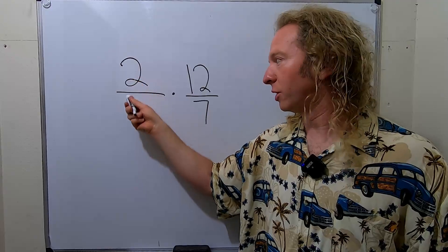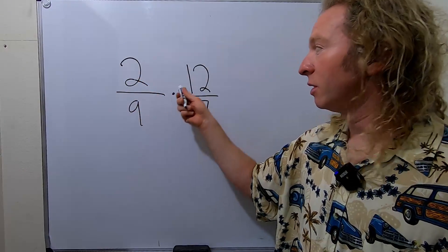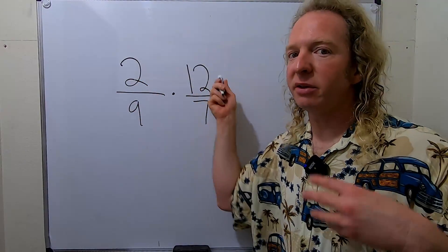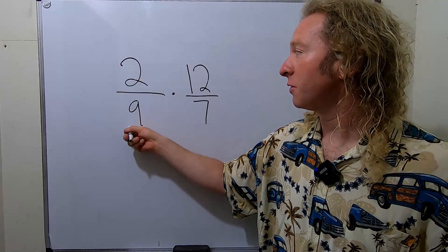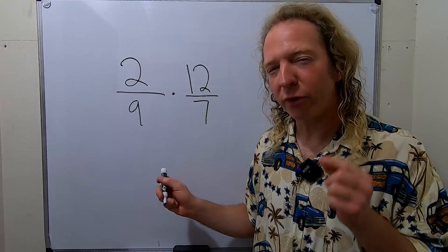So you look at the 2 and you look at the 9, nothing in common. Look at the 12, look at the 7, nothing in common. 2 and the 7, nothing in common. But look, 9 and the 12, they have something in common, 3.